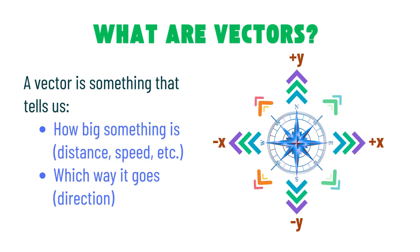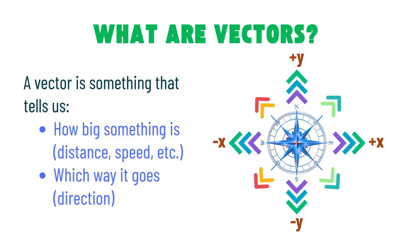So, what's a vector? It's just a way to show two things at once: how big something is — like distance, speed, etc. — and which way it goes, the direction. That's it. Vectors are like super arrows that tell the whole story.